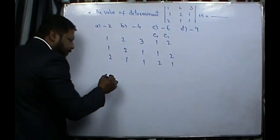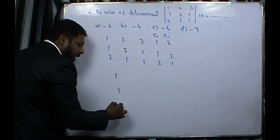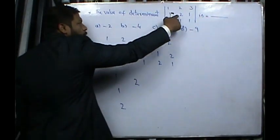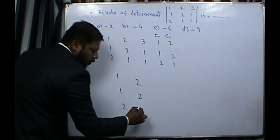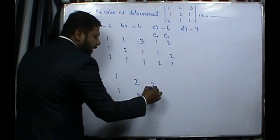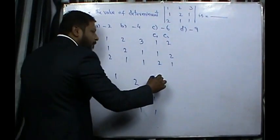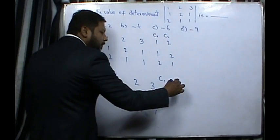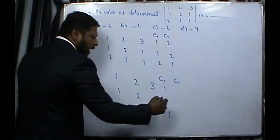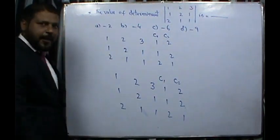I will show you again. First, the determinant is written: 1, 1, 2 in the first row; 2, 2, 1 in the second row; and 2, 2, 1, then 3, 1, 1 in the third row. What do we do? We repeat column 1 and column 2: 1, 1, 2, then 2, 2, 1. I will show you again.